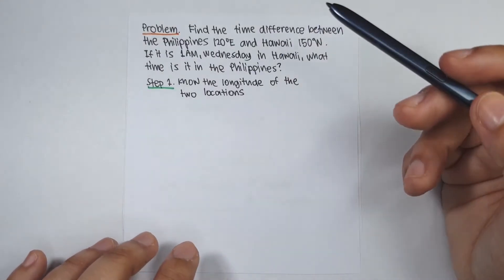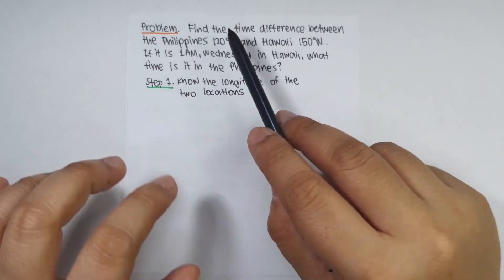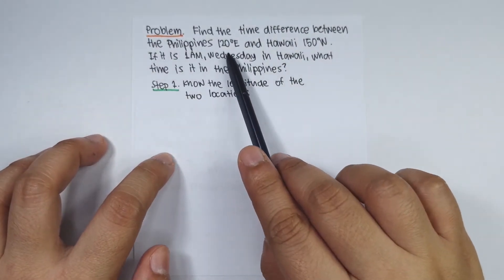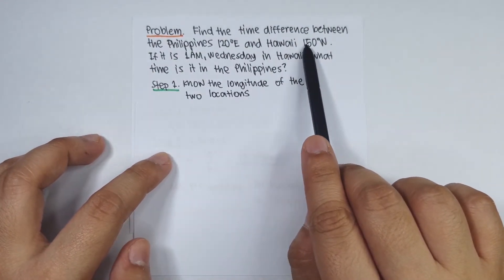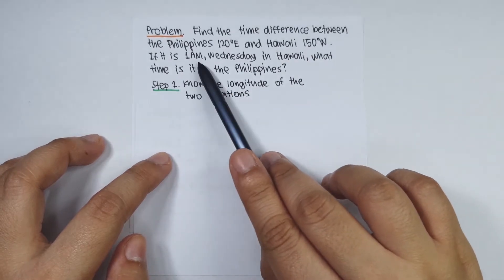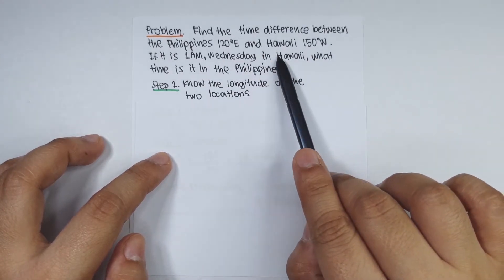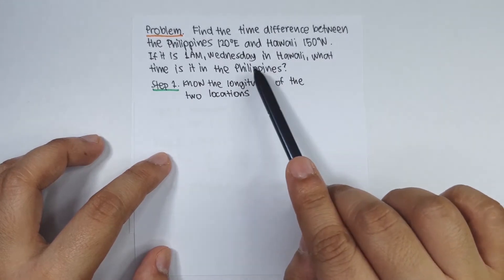Now let's solve our last problem. Find the time difference between the Philippines at 120 degrees east and Hawaii at 150 degrees west. If it is 1 a.m. Wednesday in Hawaii, what time is it in the Philippines?